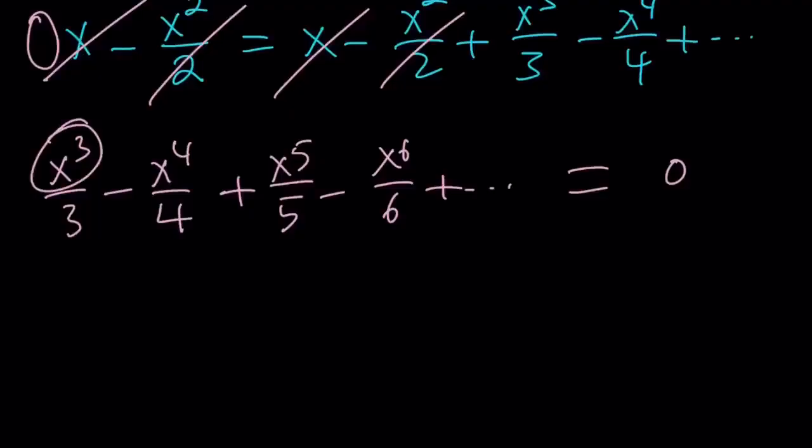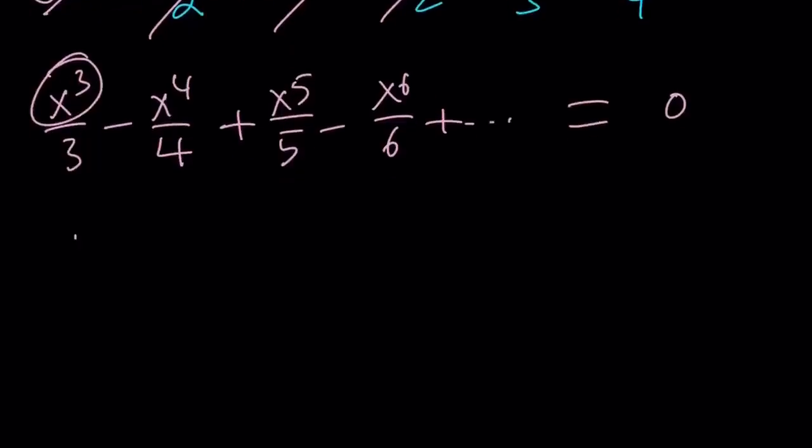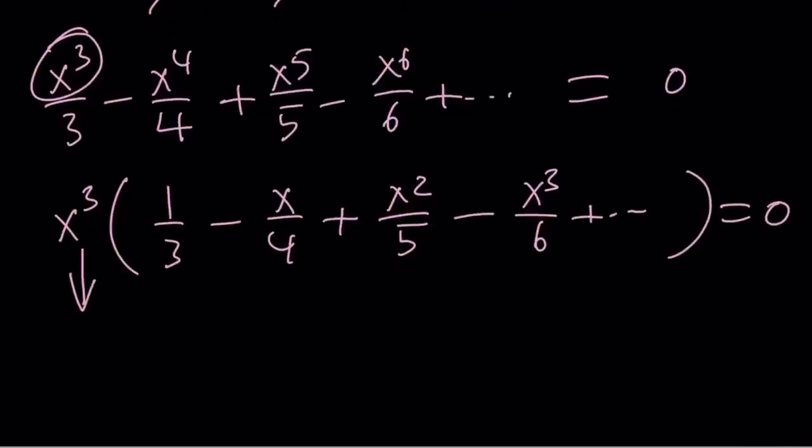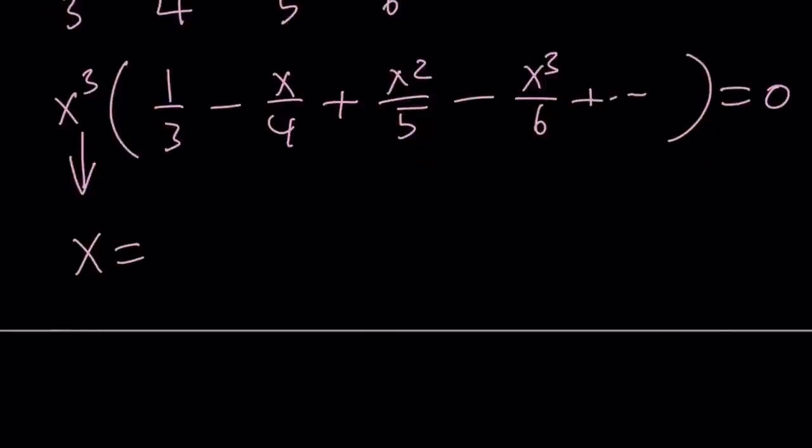Here's what I can do. x³ is the greatest common factor. So I can take out x³, and I'm going to end up with 1/3 minus x/4 plus x²/5 minus x³/6 and so on. Notice that when you set it equal to 0, x³ equals 0 satisfies this equation. Therefore, x equals 0 is a solution.